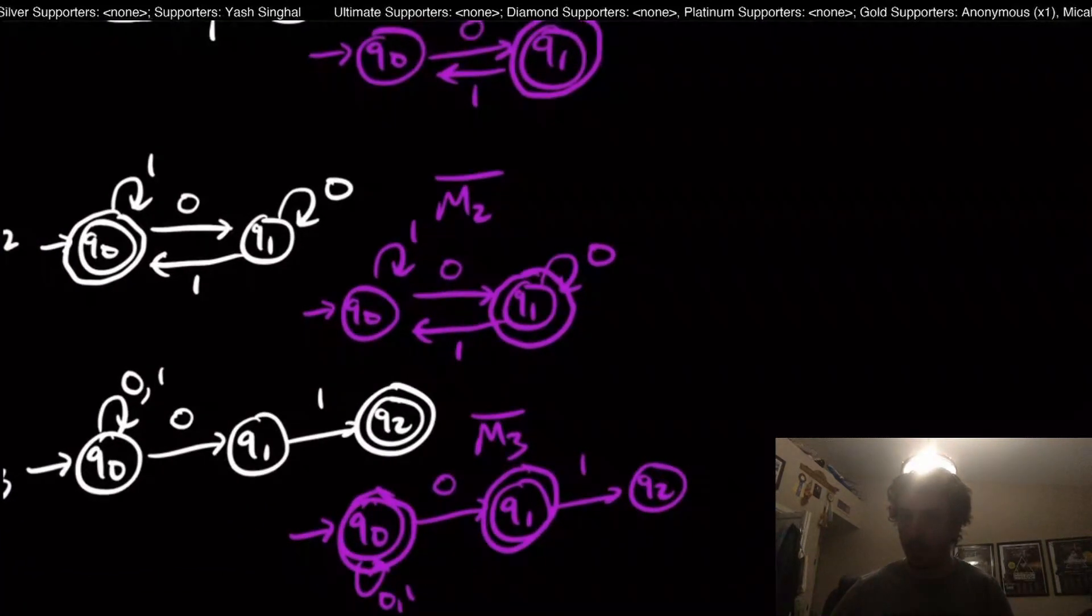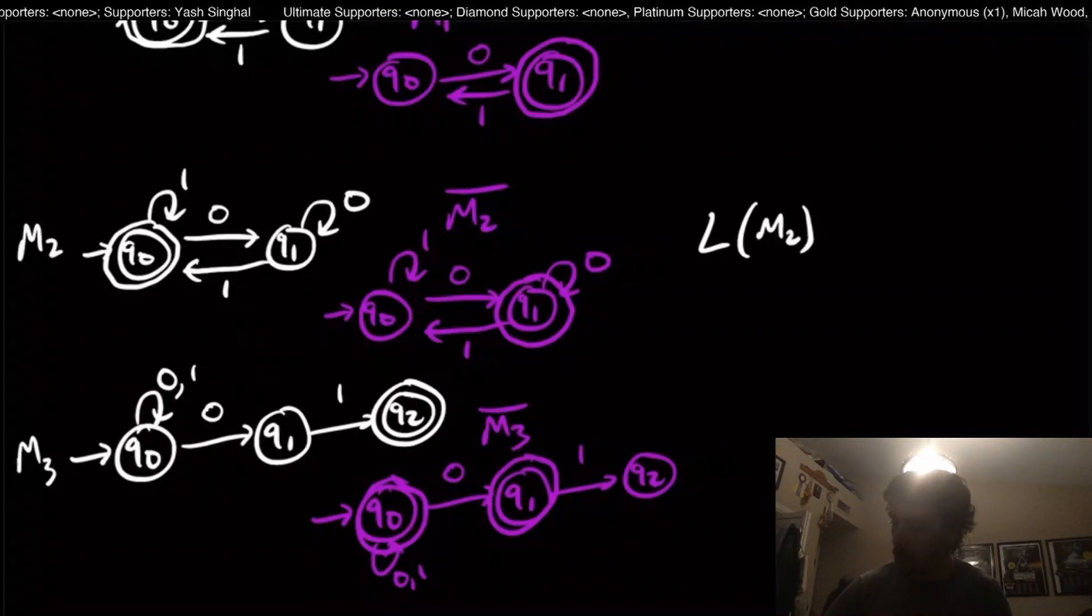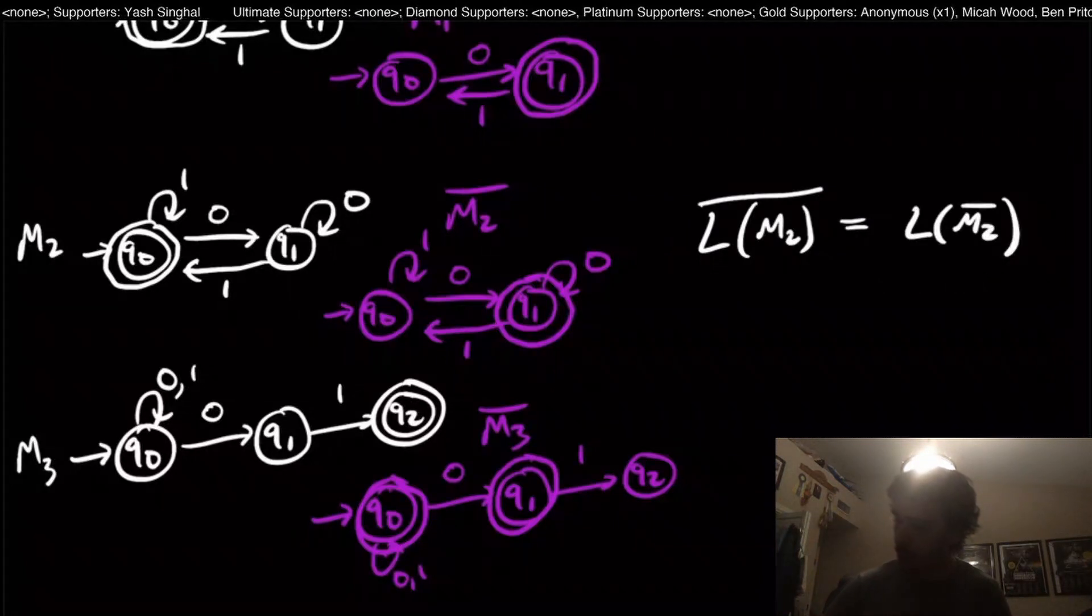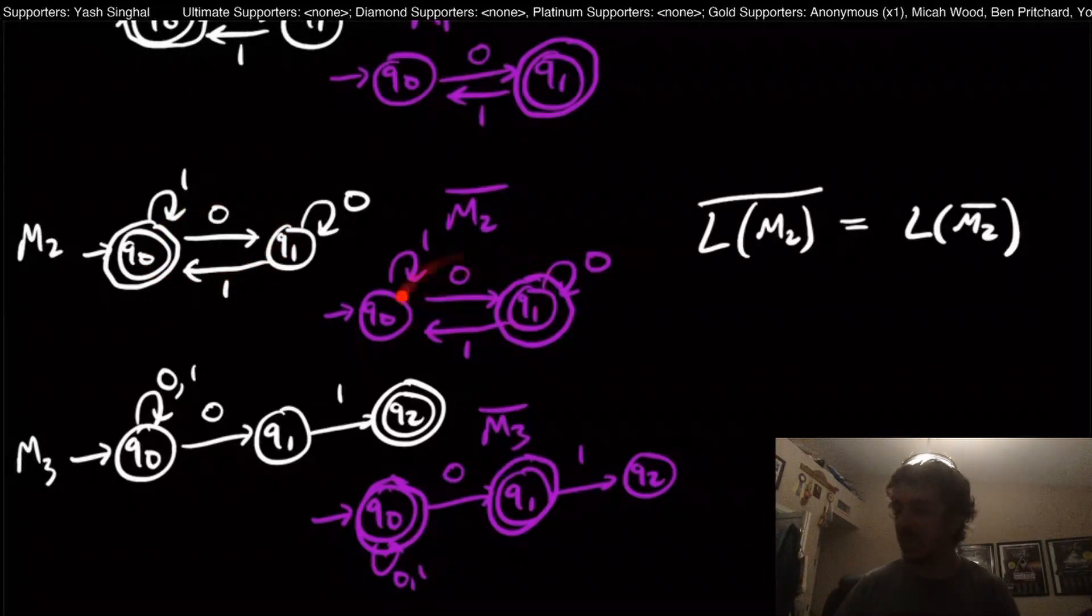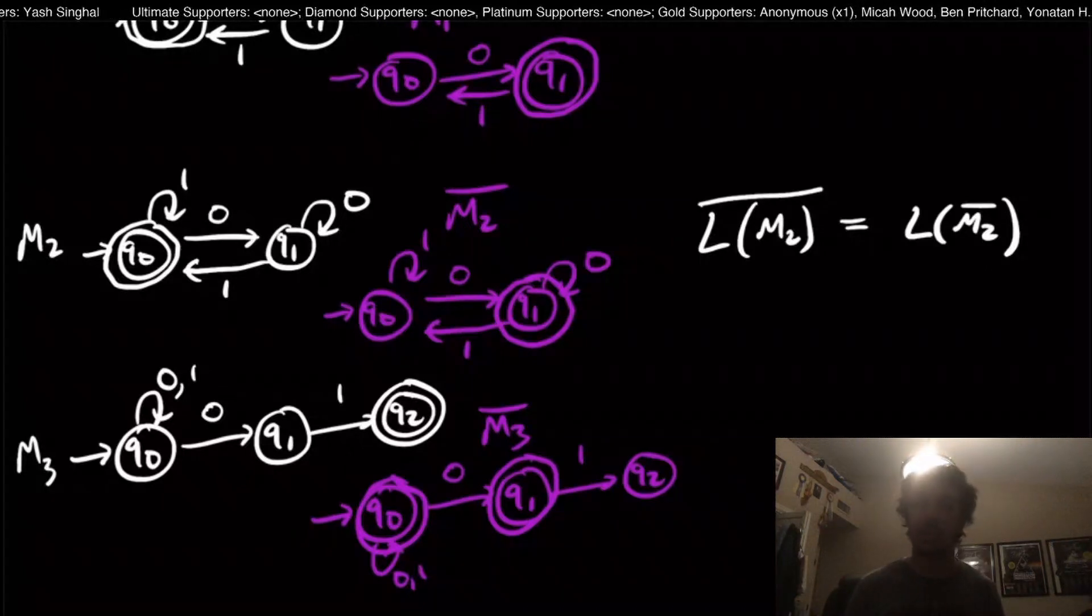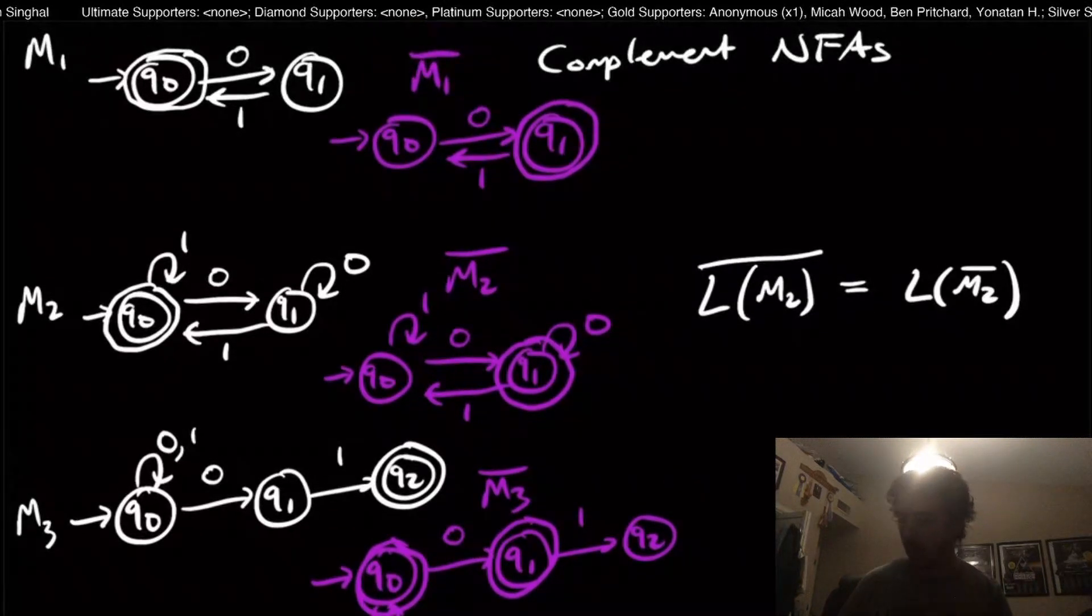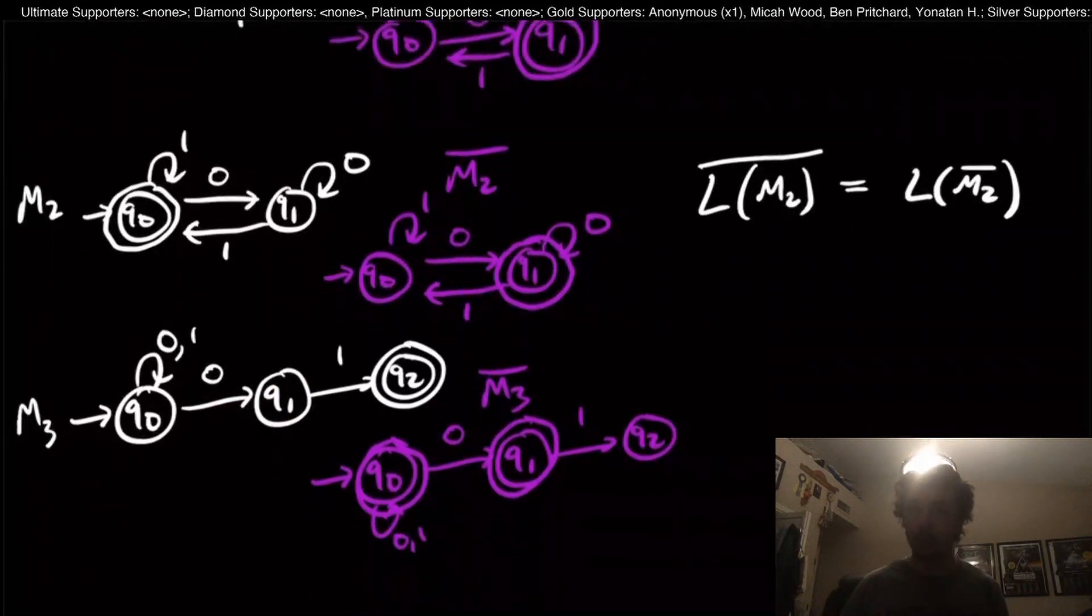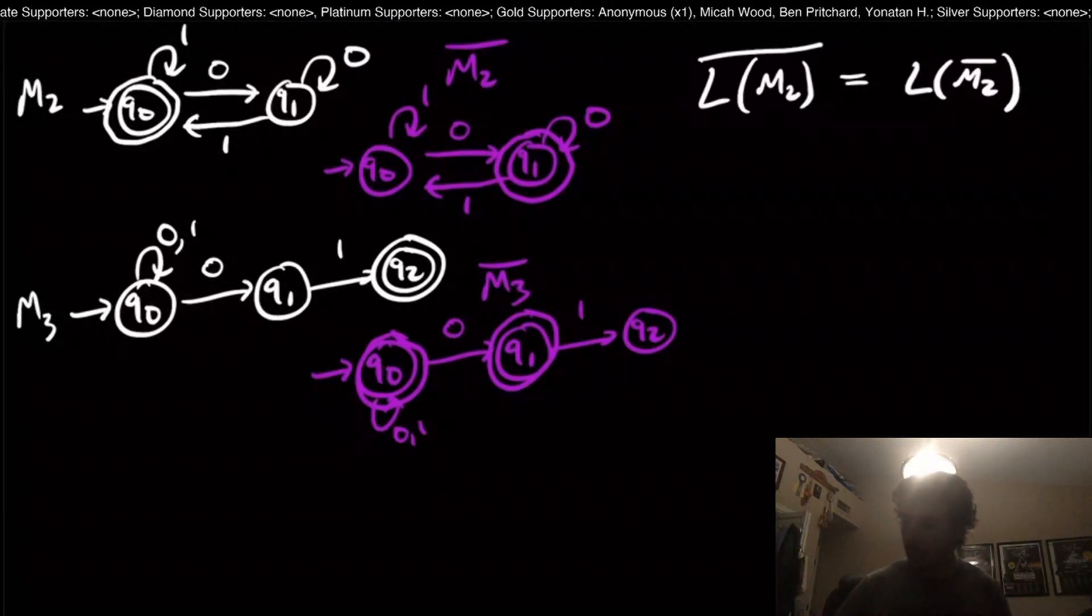What we can see immediately is that for the second machine, we have that the complement of the language of M2 is equal to the language of M2 bar. The actual complement of this language is this machine right here because when you apply the complement operation to a DFA, you always get a DFA for the actual complement. You may be thinking, okay, well don't you get the exact same thing for these other two machines M1 and M3? What I'm going to show you is that this is not the case, and I'm going to start with M3.